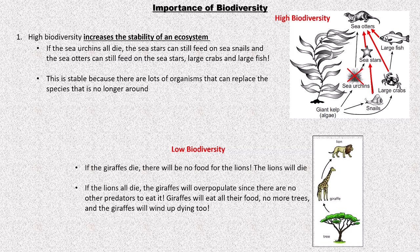With low biodiversity, if the giraffe dies, there'll be no food for the lions — dead. Another scenario: if the lion dies, the giraffes will overpopulate, eating all the trees. No more trees left, the giraffes die. So if you remove the top predator, it causes a whole collapse of everything.